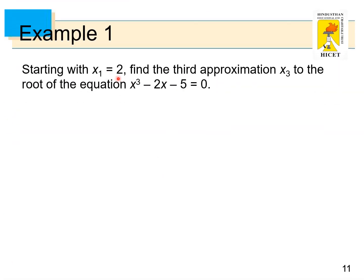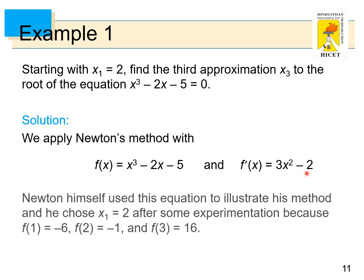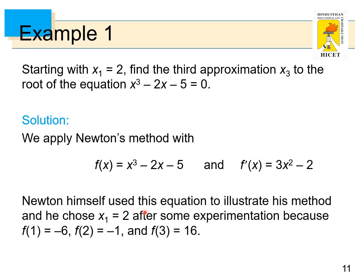Starting with x1 = 2, find the third approximation x3 to the root of the equation x^3 - 2x - 5 = 0. By considering this example, we are proving Newton's Raphson's method. We apply that method by taking the function f(x) = x^3 - 2x - 5 and finding the derivative f'(x) = 3x^2 - 2. Newton himself used this equation to illustrate his method and he chose x1 = 2 after some experimentation because f(1) = -6, f(2) = -1, and f(3) = +16.